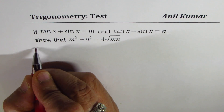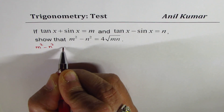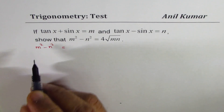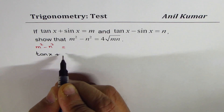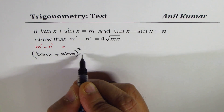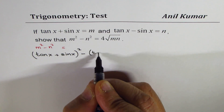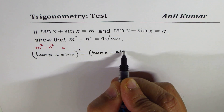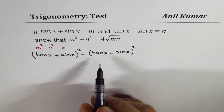So let's first find what m squared minus n squared equals. We are given m is tan x plus sin x, so we write this as (tan x plus sin x) whole squared, minus n squared, which means (tan x minus sin x) whole squared. So that is m squared minus n squared.